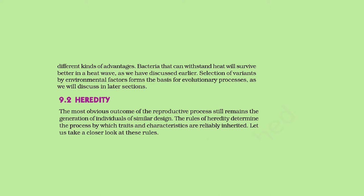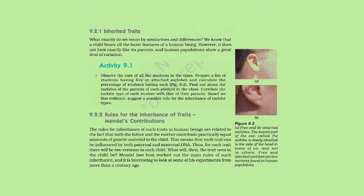9.2 Heredity. The most obvious outcome of the reproductive process remains the generation of individuals of similar design. The rules of heredity determine the process by which traits and characteristics are reliably inherited. What exactly do we mean by similarities and differences? We know that a child bears all the basic features of a human being. However, it does not look exactly like its parents, and human populations show a great deal of variation.